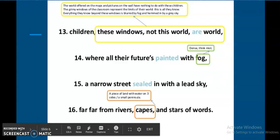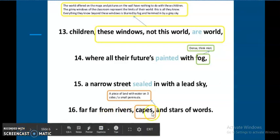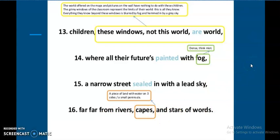'A narrow street sealed in with a lead sky.' This line number 15 is kind of the location of the school. It's in a narrow street, it's sealed with a lead sky. Now lead does not mean the actual metal, but the color of the dark clouds which look like lead. It's very heavy. 'Far far from rivers capes and stars of words.' The poet now in line number 16 says their physical presence is very problematic.